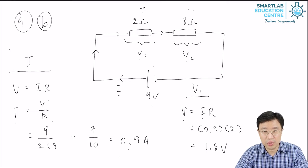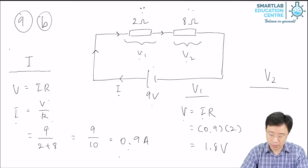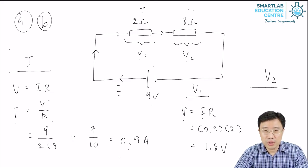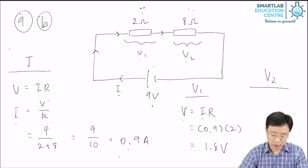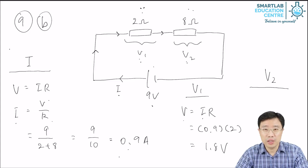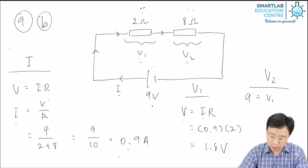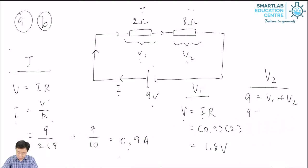To calculate V2, we can use the same method, but there is a second method. The total EMF of the circuit is 9 volts, which tells you how much electrical energy is supplied. The total PD of the circuit is V1 added to V2, which tells you how much electrical energy is being used. The total EMF must equal the total PD, so 9 = V1 + V2. Since V1 is 1.8, V2 is 7.2 volts.